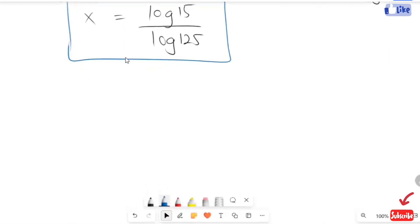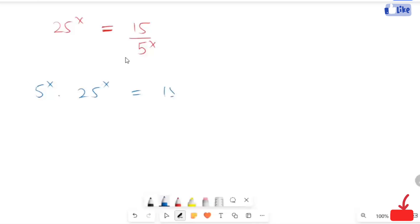I'm going to verify my answer by plugging in the value of x. Starting with the original expression and multiplying both sides, the terms cancel and our remaining expression is 125 raised to x equals 15.